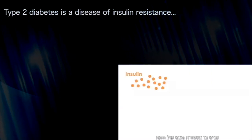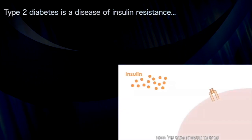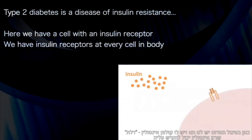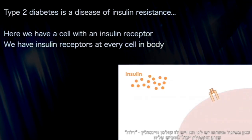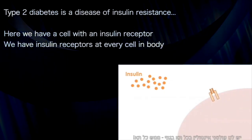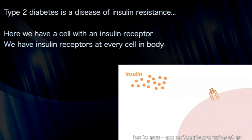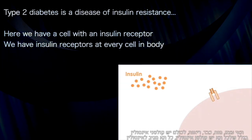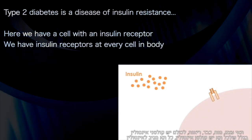Let's look at insulin through the lens of a cell itself. Here we have a cell — this big circle — with an insulin receptor, a door that only insulin can come and knock on. We have insulin receptors at every cell in the body, literally every cell, from bone cells to brain cells, from liver cells to lung cells. They all have insulin receptors.